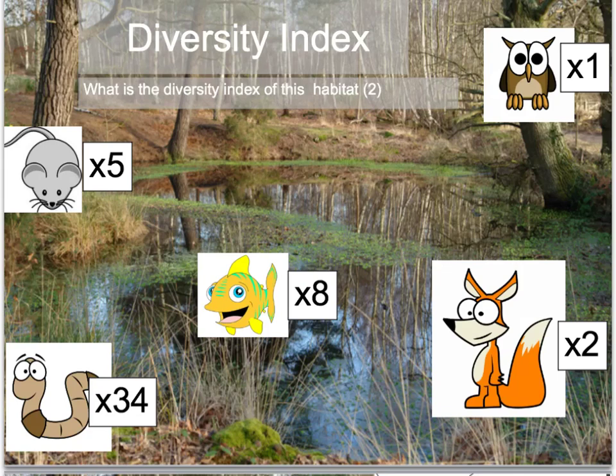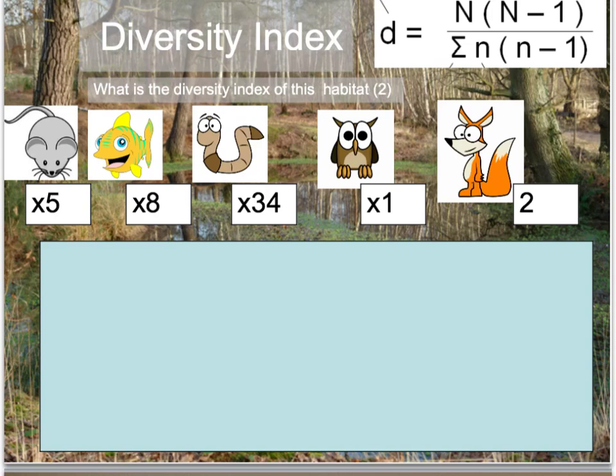Here, we've got a woodland. And the question here, what is the diversity index of this habitat? We've got one owl, two foxes, eight fish, 34 worms, and five mice. What's going to be the diversity index of it? First thing you're going to do is write up the equation. Even if you're really familiar with this and you find it very straightforward, please always write the equation up just in case you do make a mistake, you will get some credit for it. First thing we're going to deal with is the top bit, which is the big N times big N minus 1. The way you're going to do that is add up all the individuals of each species. So, it's going to be 5, add 8, add 34, add 1, add 2. And that equals 50. So, that would be 50 multiplied by 1 minus 50, which is 49. So, that's the top half dealt with.